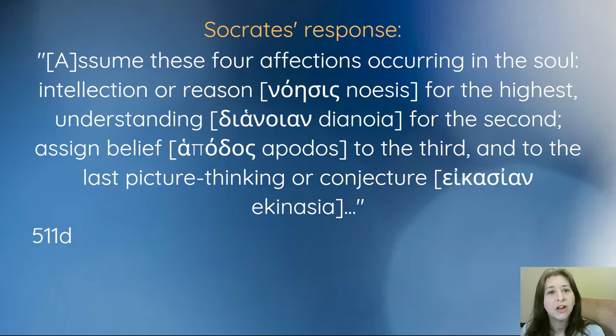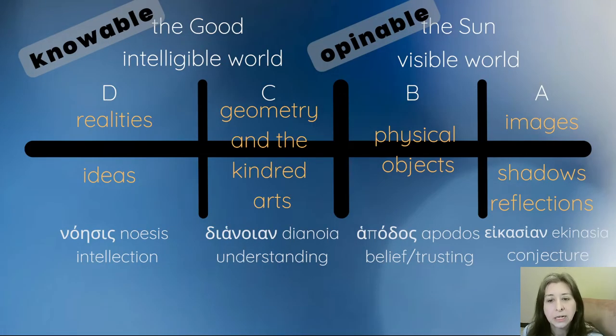Here's Socrates' advice. If you recognize sufficient as not quite correct, then you would see what he says later as an assignment to understand the divided line even better. He tells us to assume four affections occurring in the soul. Intellection or reason—the Greek is noesis—for the highest. Dianoia or understanding for the second. Belief—here the Greek is pistis rather than doxa—in the third. And then that last section I was calling A, picture thinking or conjecture or eikasia in Greek. So I'm going to change now the Greek for the cognitive functions or the affections in the soul. For section A, that's eikasia or conjecture. Section B is now changed to pistis, which is belief, or I'm told it's also something closer to trusting. Section C is still dianoia, understanding. And now section D has changed to noesis or intellection.